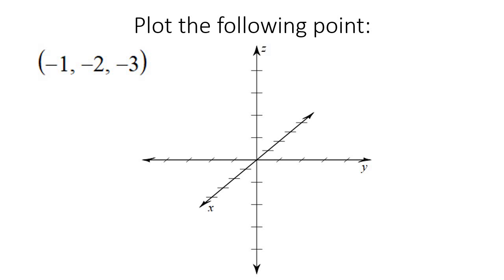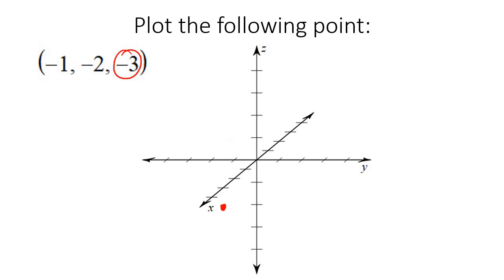Here's the next one. We go negative one on X, so one back. Then we go negative two on Y — one, two backwards. And then we go three down on Z. Just use this distance as a spacer: one, two, three. It almost looks like we lined up with negative two, but it's just the three-dimensional nature. I know it looks a bit weird — it is weird — but that's where your point would be.